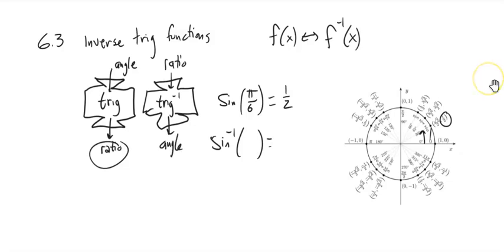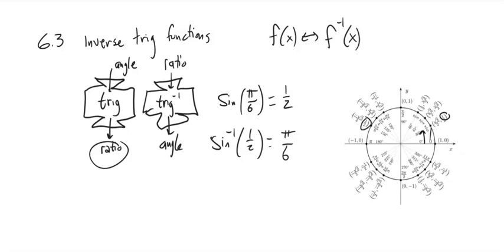Inverse sine of 1/2 is asking: if my ratio is 1/2, if my y-value is 1/2, what's my angle? It's π/6. But take note — it also happens at 5π/6. However, this is a function; it only returns one answer.